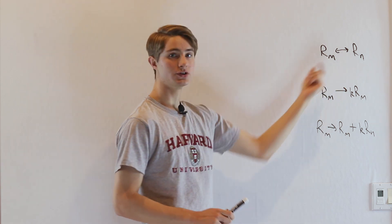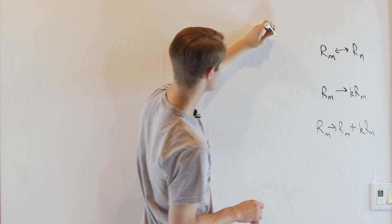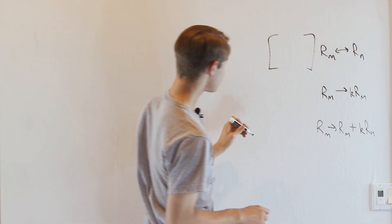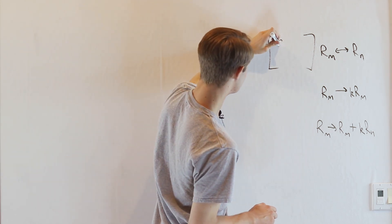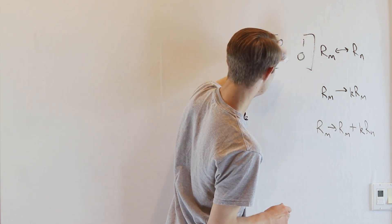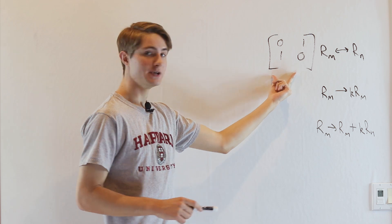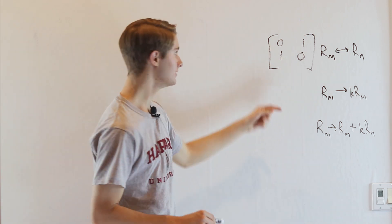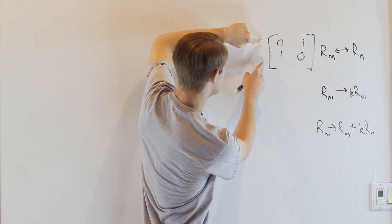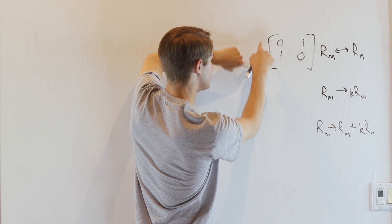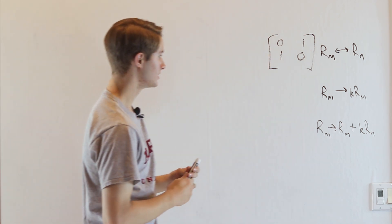The first is that you can switch two different rows. For example, if you take the matrix [[0, 1], [1, 0]], this is an elementary matrix because we take the identity [[1, 0], [0, 1]] and then swap these two rows around. So that's one elementary row operation.